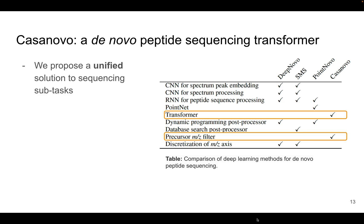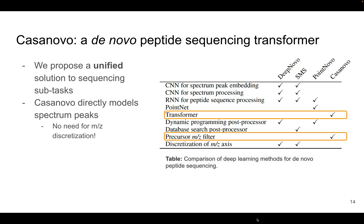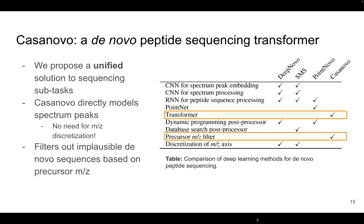The model we propose, Casanova, takes all peaks in the mass spectrum as well as the observed precursor mass and charge to predict the peptide. It offers a unified solution to different sequencing sub-tasks. Additionally, it is able to directly model mass spectra in their native form, so it doesn't need to discretize the m/z axis. Finally, Casanova filters out implausible de novo peptide sequences as it predicts them during inference, based on the precursor m/z observed from the spectrum.